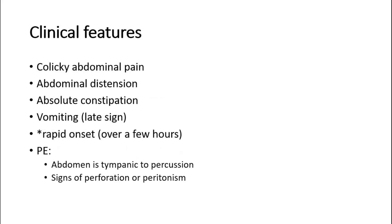Patients with a volvulus will present with the clinical features of bowel obstruction. Colicky abdominal pain, abdominal distension, and absolute constipation occur earlier, whereas vomiting is a late sign as the sigmoid colon is very distal in the GI tract. Compared to other causes of bowel obstruction, volvulus occurs very rapidly, over a few hours.